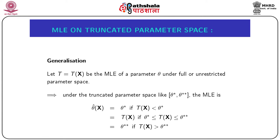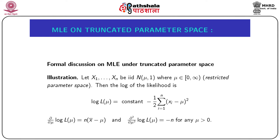Now for a bit of generalization: let T = T(x) be the MLE of parameter θ under the full unrestricted parameter space. Then under the truncated parameter space [θ*, θ**], the MLE is: θ* if T(x) < θ*; T(x) if θ* ≤ T(x) ≤ θ**; and θ** if T(x) > θ**.